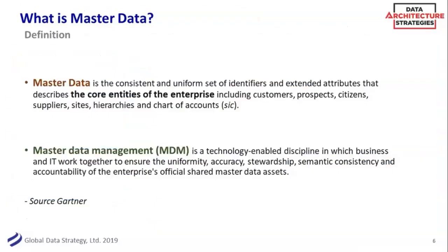Going back to core definitions: what is master data? Taking this from Gartner — it's that consistent set of identifiers and attributes around the core entities of the enterprise. Examples include prospects, citizens, suppliers, and sites. What do we mean by those identifiers and attributes? That's a big part of getting master data right — really knowing what pieces to master.